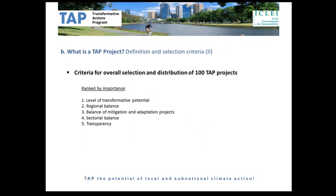Looking at the criteria for overall selection and distribution of TAP projects, in the selection process we look at five criteria: the level of transformative potential; regional balance — projects distributed fairly equally between the North and the South; a balance of mitigation and adaptation projects; sectoral balance across transport, energy, biodiversity, housing, etc.; and transparency — meaning how informed the different applications are.